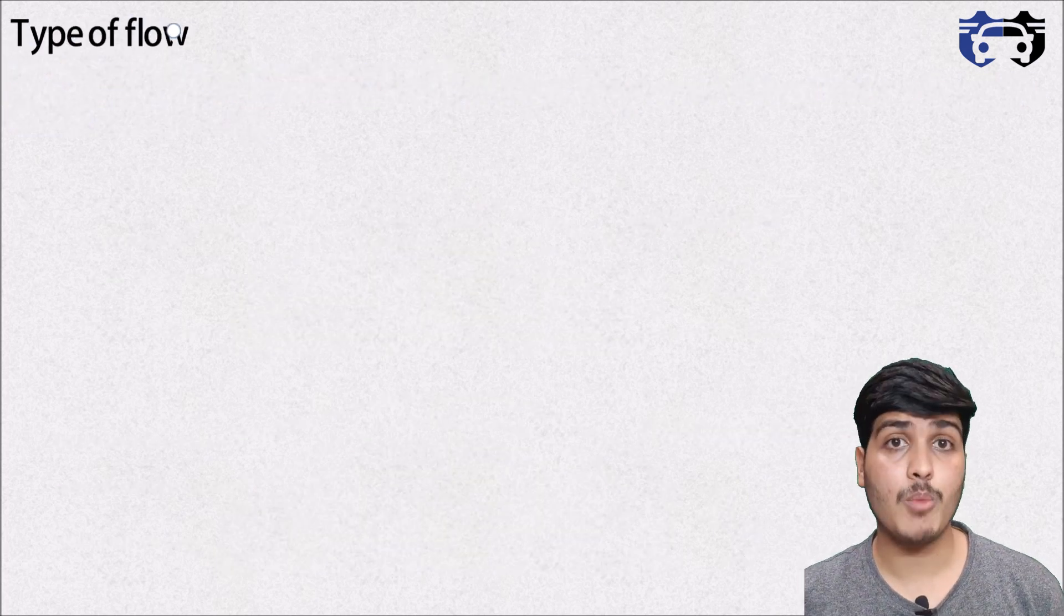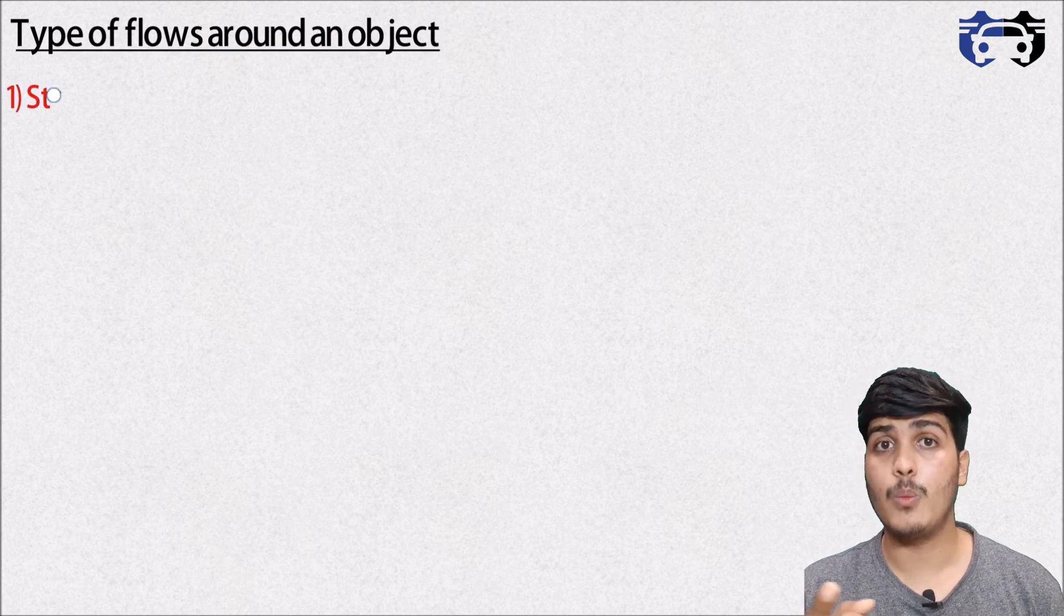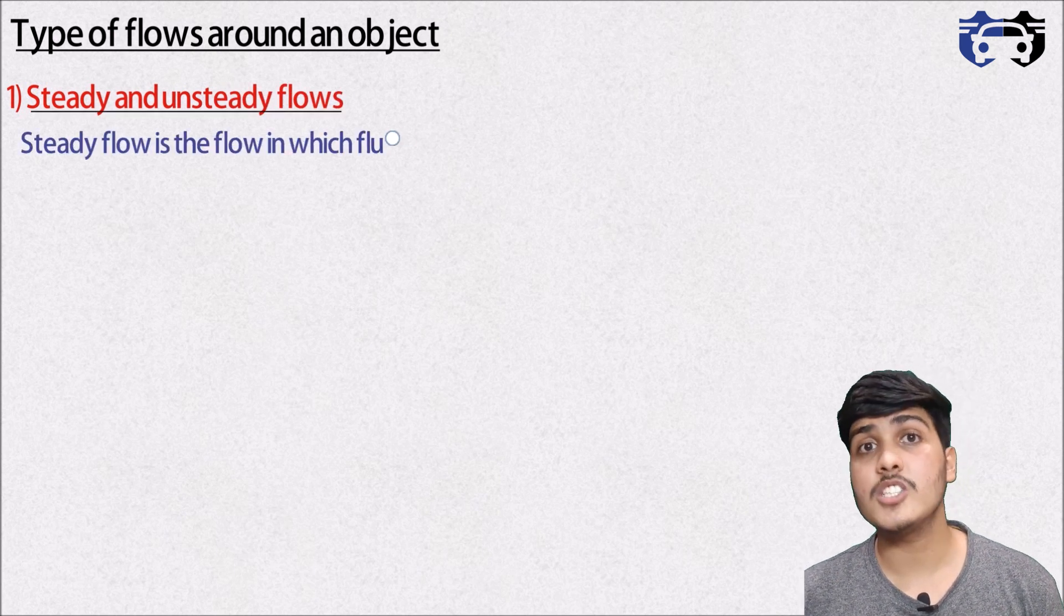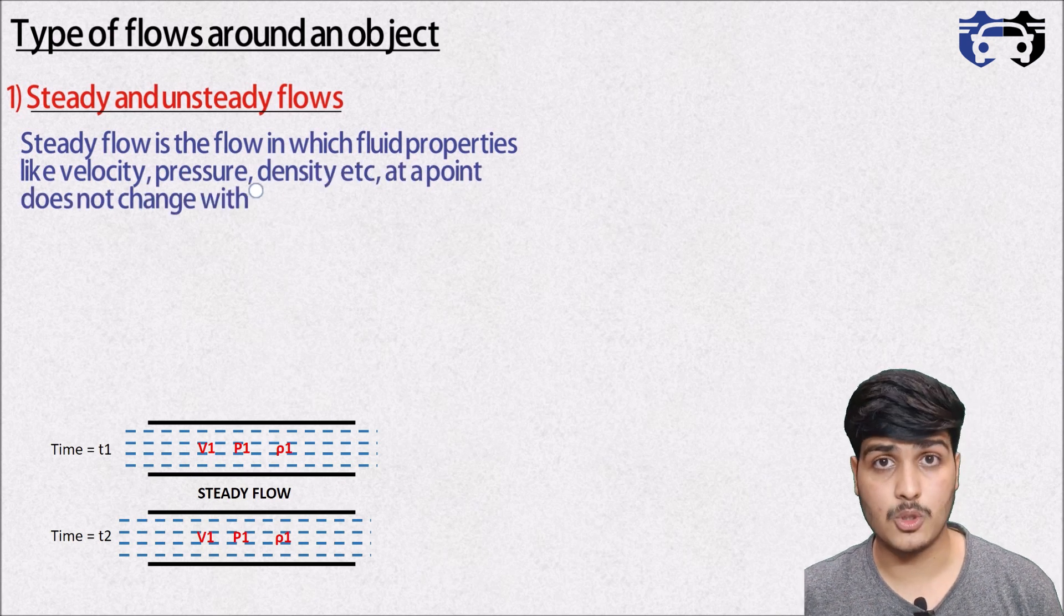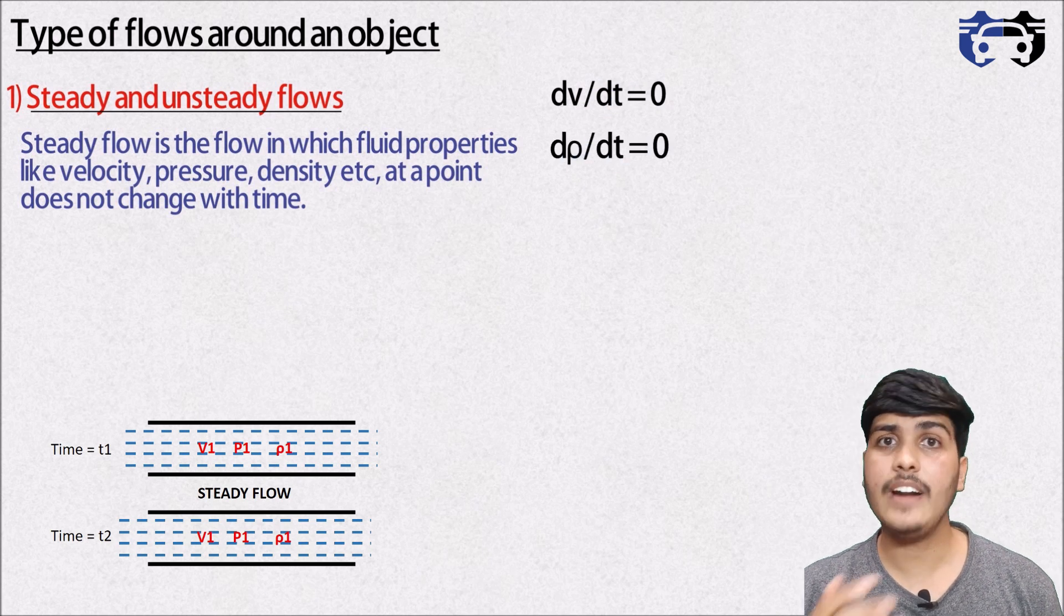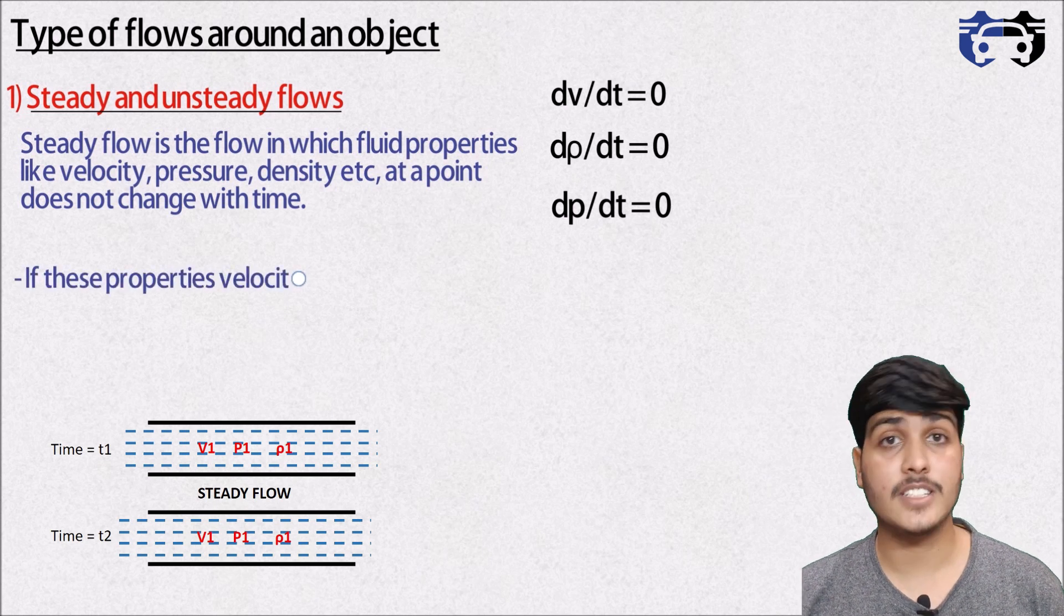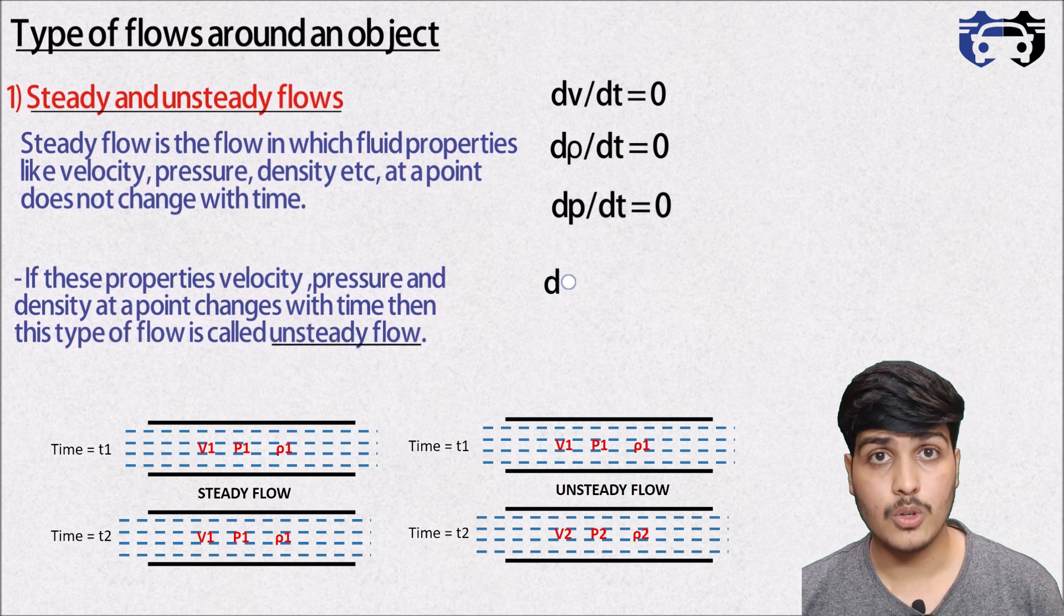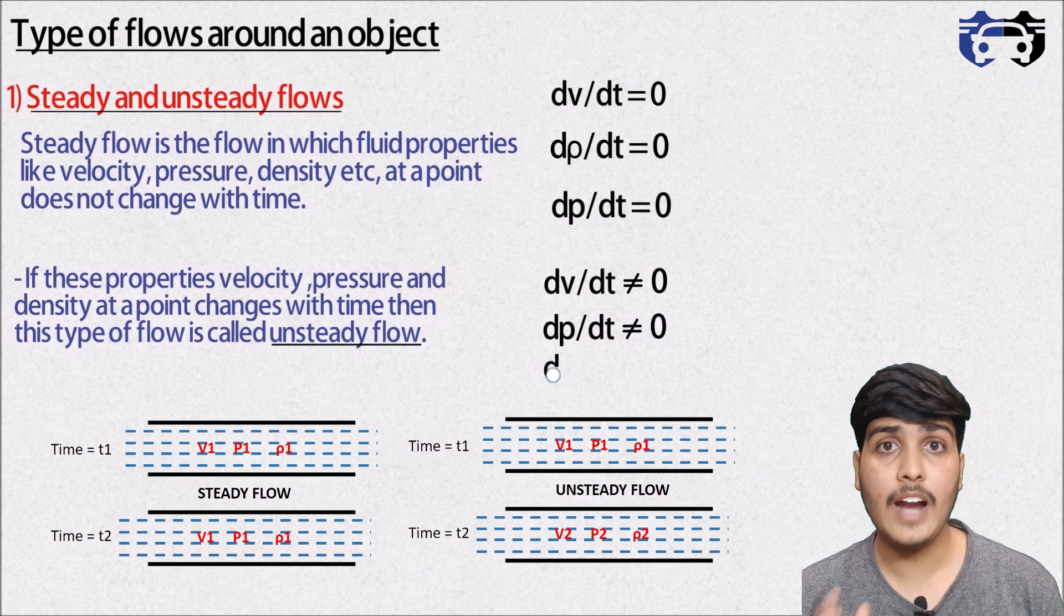There can be different flows around the body. Here I will be discussing about those flows which are important for aerodynamics. Number one is the steady and unsteady flow. Steady flow is the type of flow in which the properties like velocity, pressure, and density at a point does not change with respect to time. That is dv/dt = 0, dρ/dt = 0, and dp/dt = 0. Now if velocity, pressure, and density at a point changes with respect to time, then this type of flow is called unsteady flow. That is dv/dt ≠ 0, dp/dt ≠ 0, and dρ/dt ≠ 0.